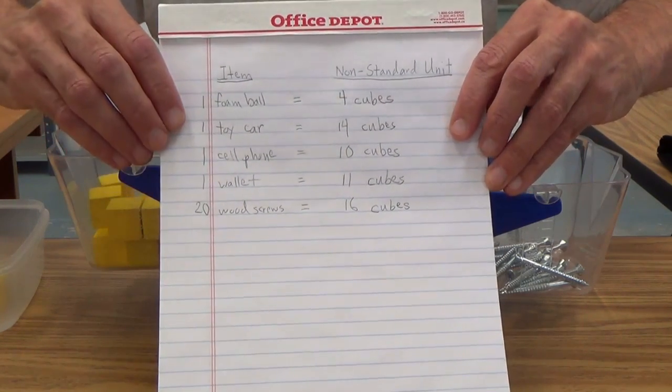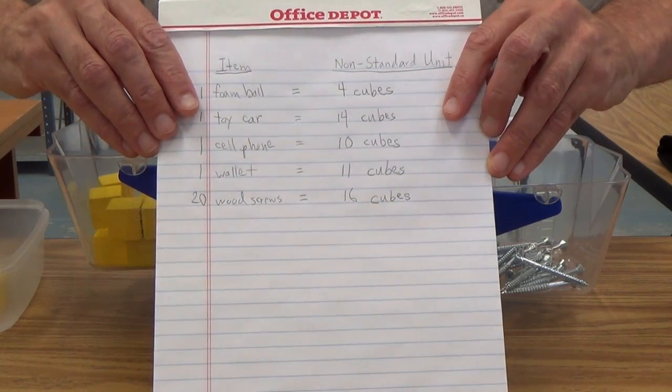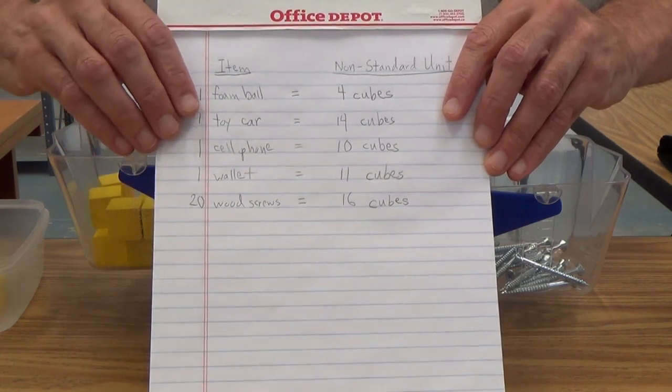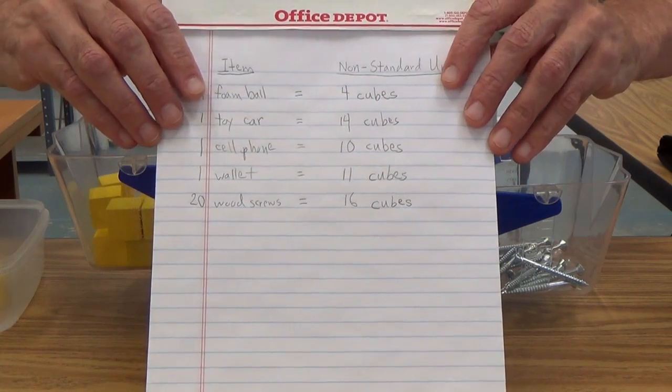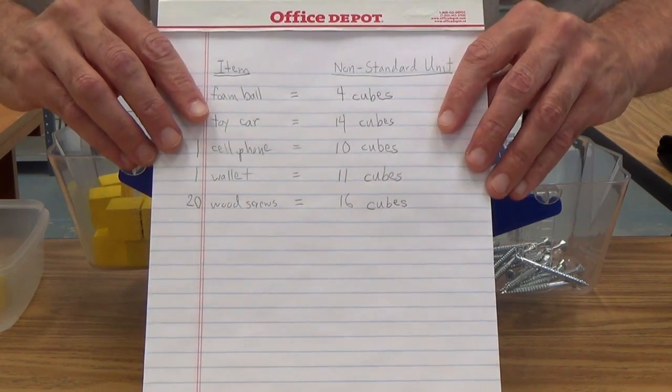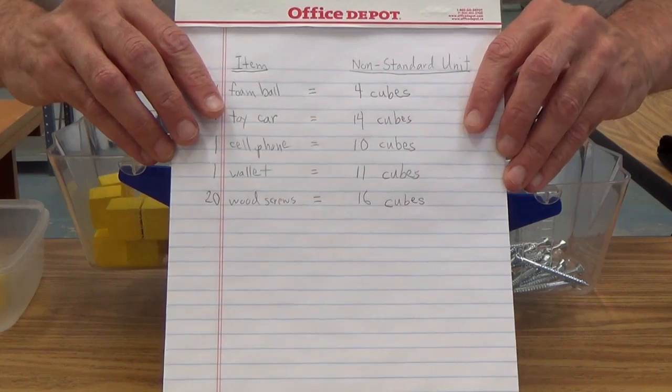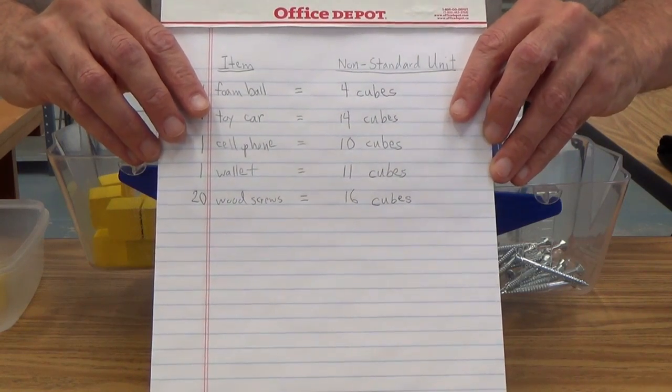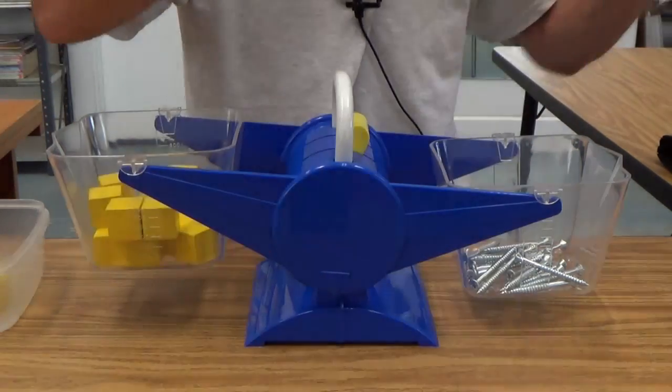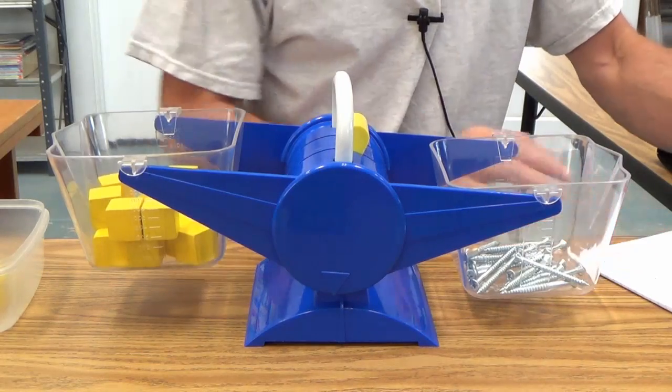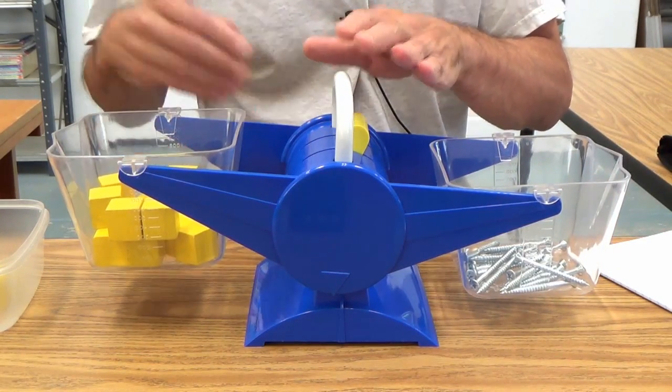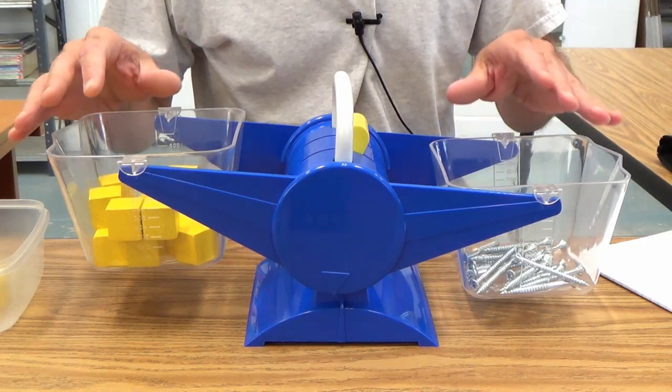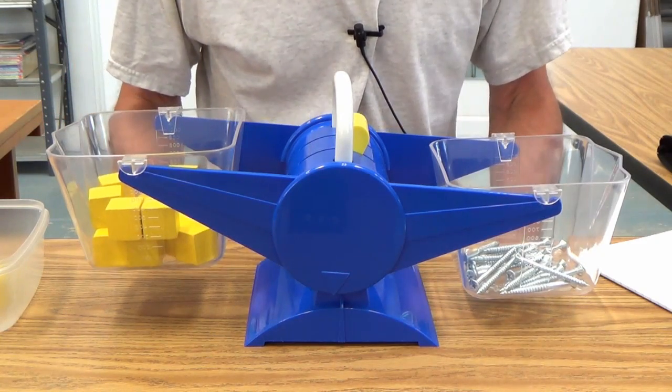Take all this information, set up a graph, make a graph out of it, compare, contrast all the things you do with a graph. And I think that would be a wonderful companion activity to do with this weighing and balancing activity we just did here with the balance scale.